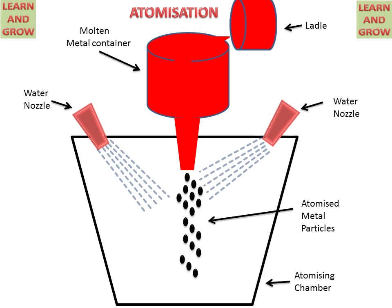These particles will be in spherical or powder form. Mostly particles will be spherical in form. So this is the atomization process, which will convert molten metal into spherical or powder form of the metal.